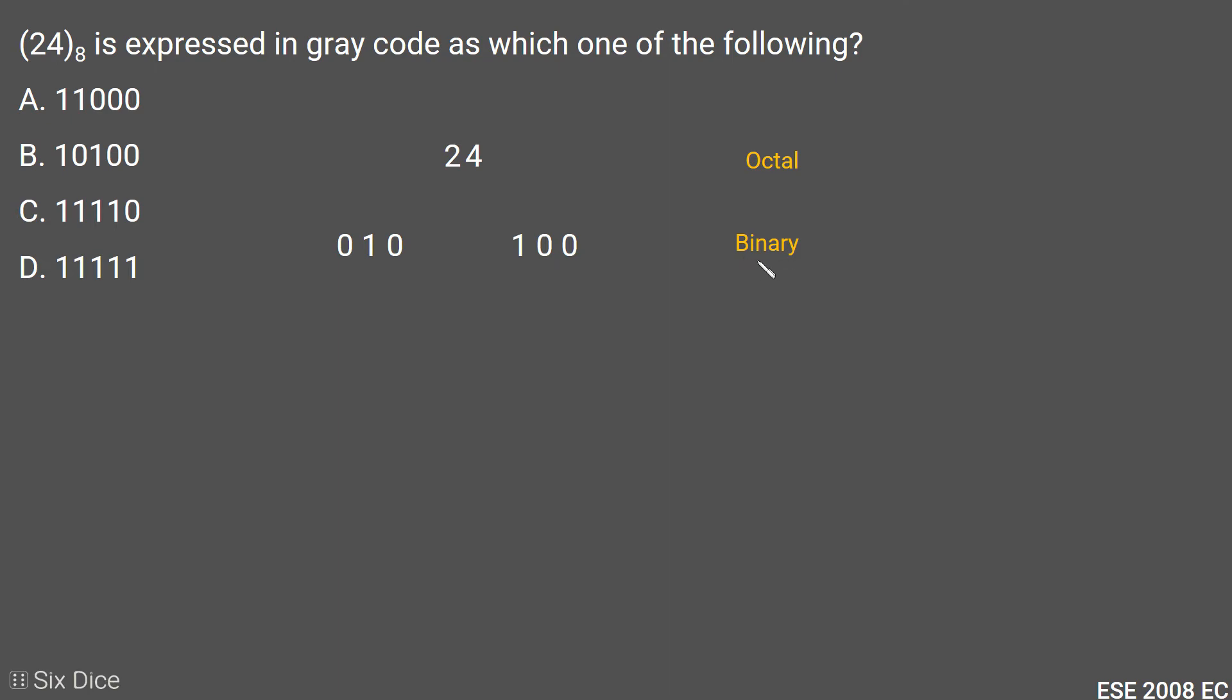Now we can easily convert into gray code. To convert into gray code, we need to remember only the XOR truth table. So here in this truth table, whenever both digits are different, then we will get 1 as an answer, and whenever both digits are the same, then we will get 0 as an answer.